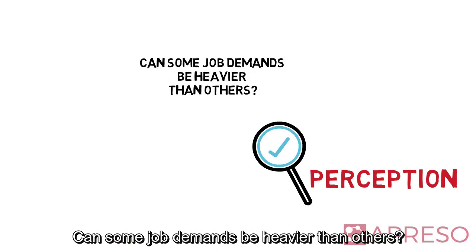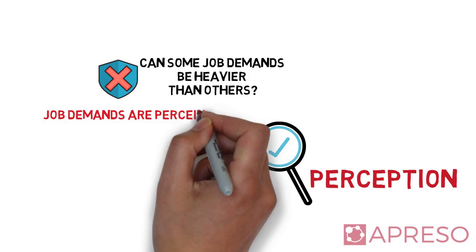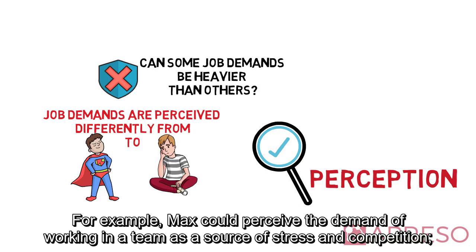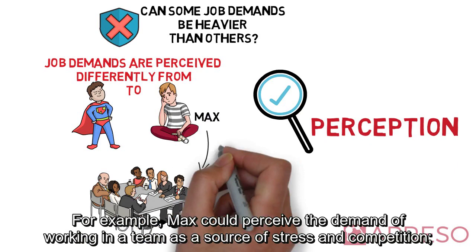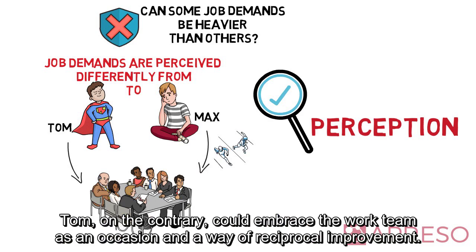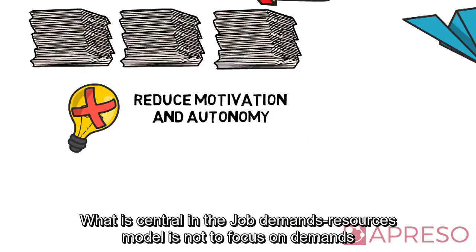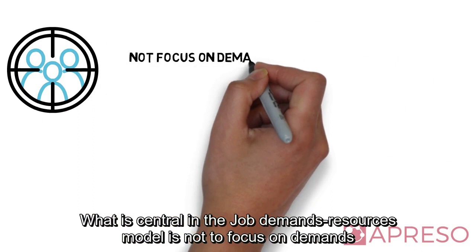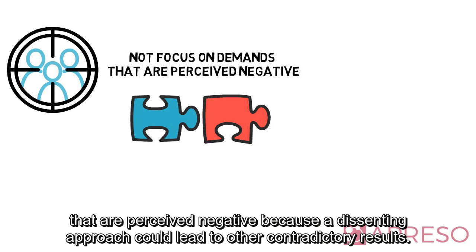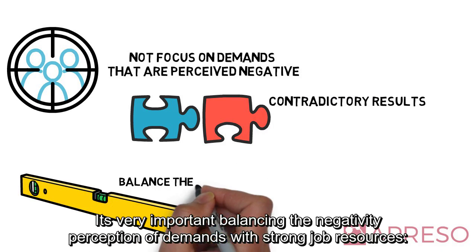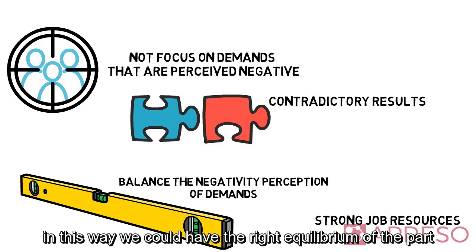Can some job demands be heavier than others? Actually, no. Job demands are perceived differently from person to person. For example, Max could perceive the demand of working in a team as a source of stress and competition. Tom, on the contrary, could embrace the work team as an occasion and a way of reciprocal improvement. What is central in the job demands and resources model is not to focus on demands that are perceived negatively, because a dissenting approach could lead to contradictory results. It's very important to balance the negative perception of demands with strong job resources.